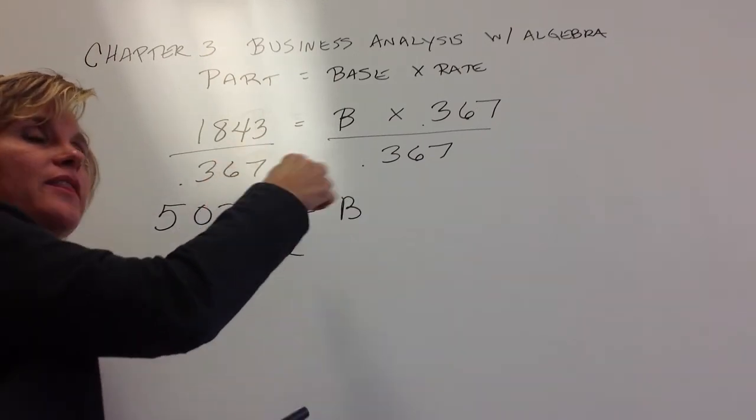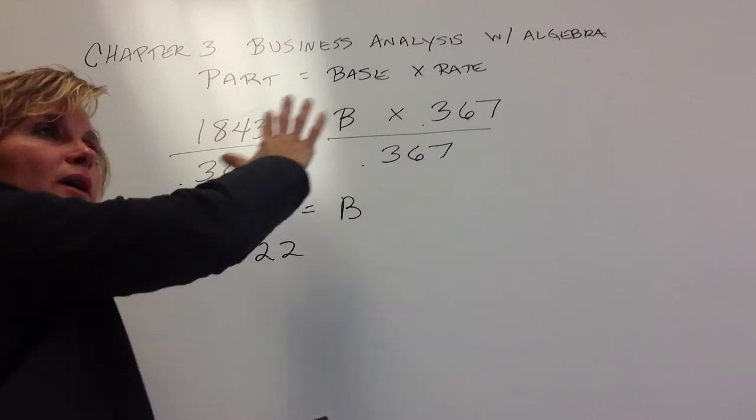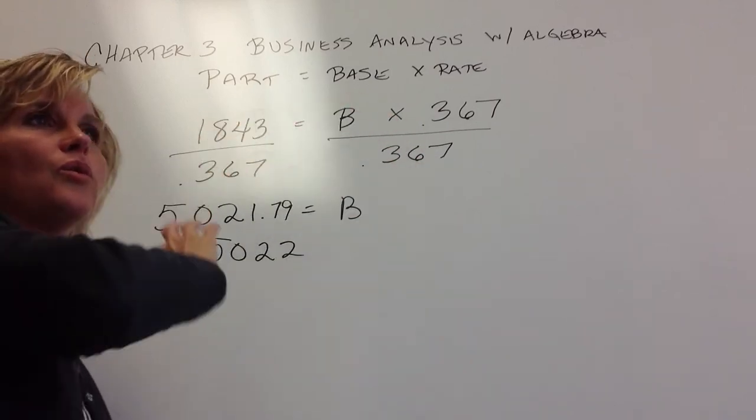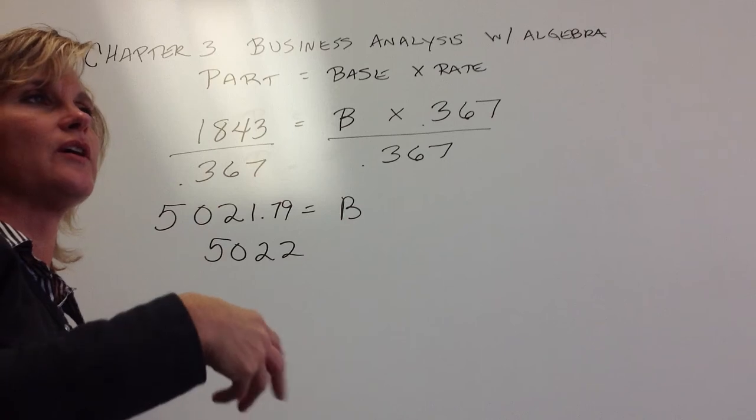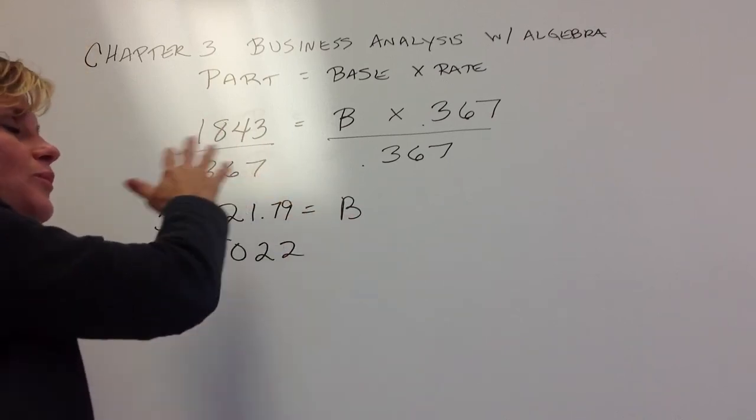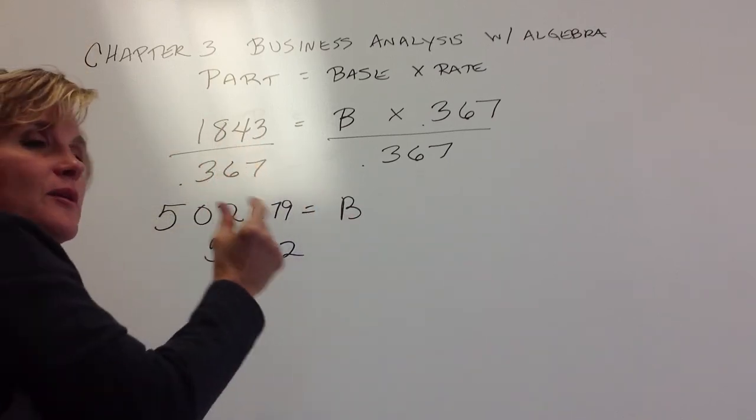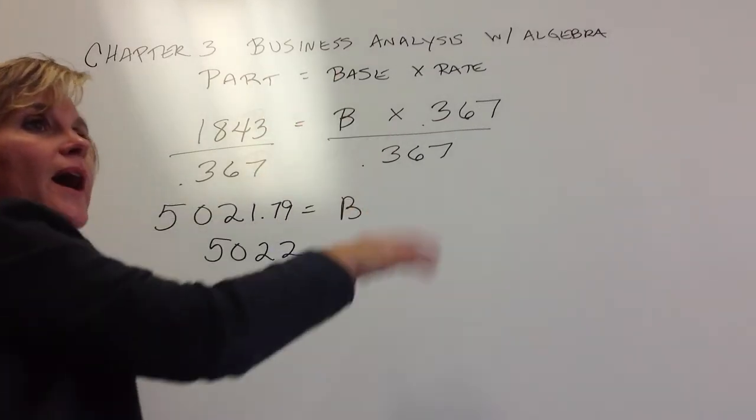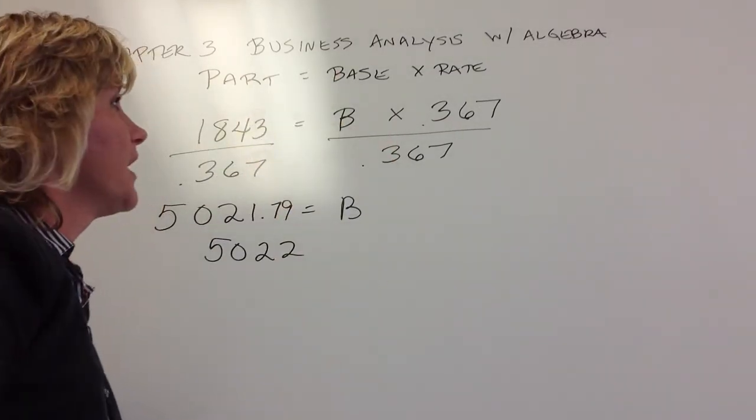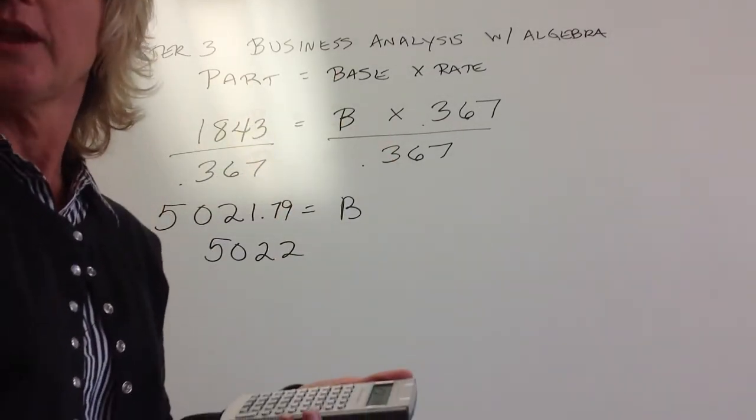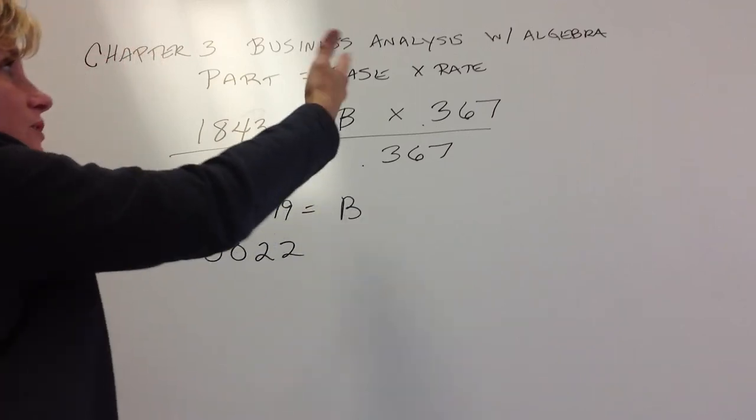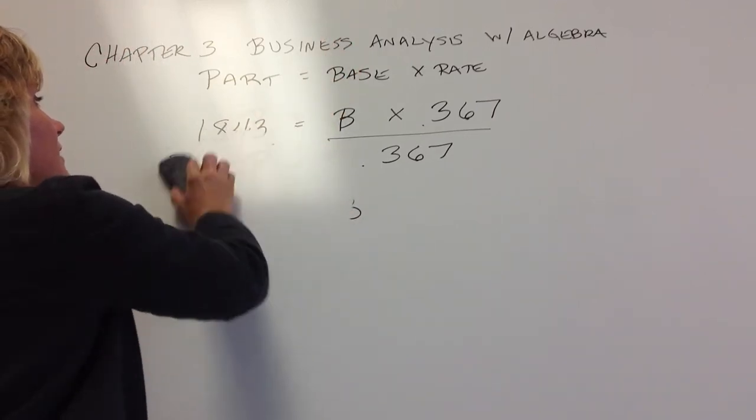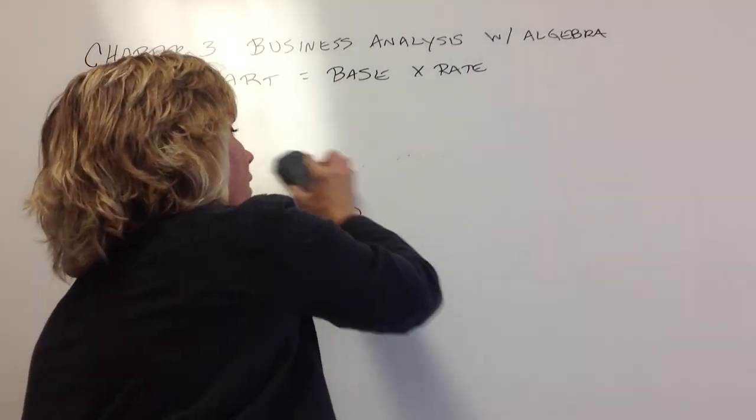So again, try to think that when we're solving for the base, you're solving for that total population, or again, total sales or something like that. They're going to give us the piece of the pie, and we're going to try to go back and figure out what that whole pie is. And then you also could be asked to solve for the rate. I would do that type of problem the same way.